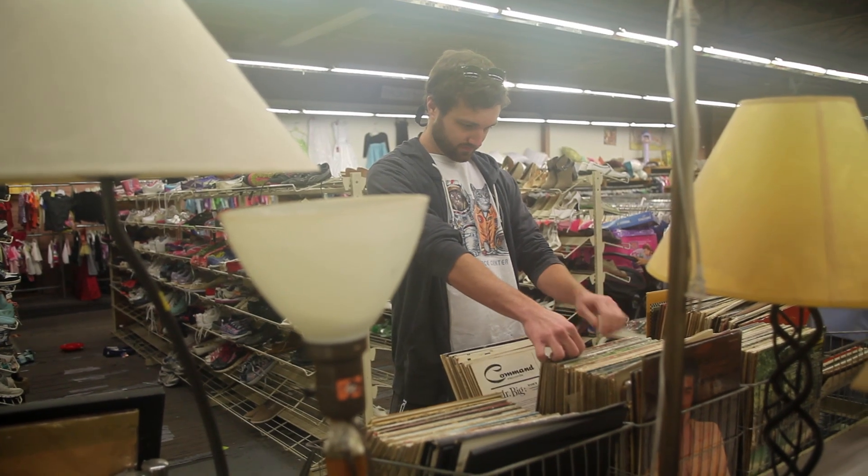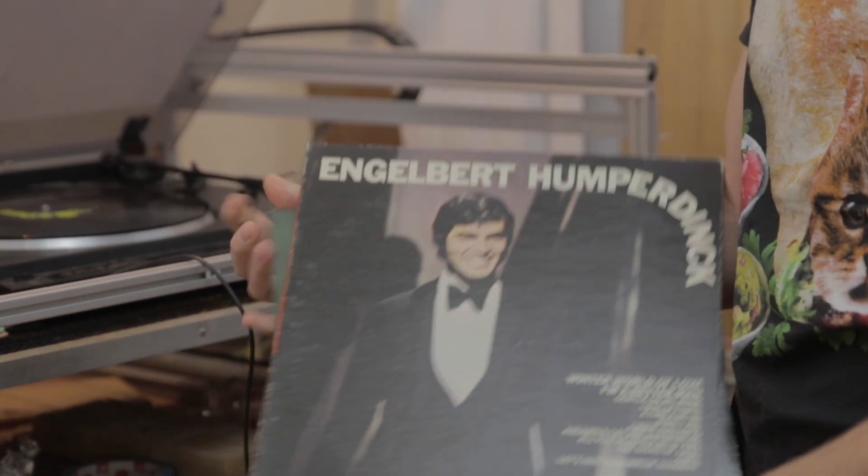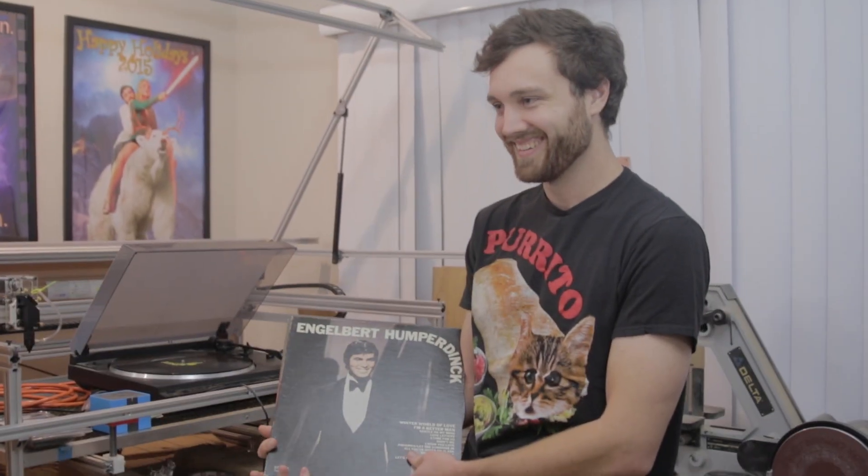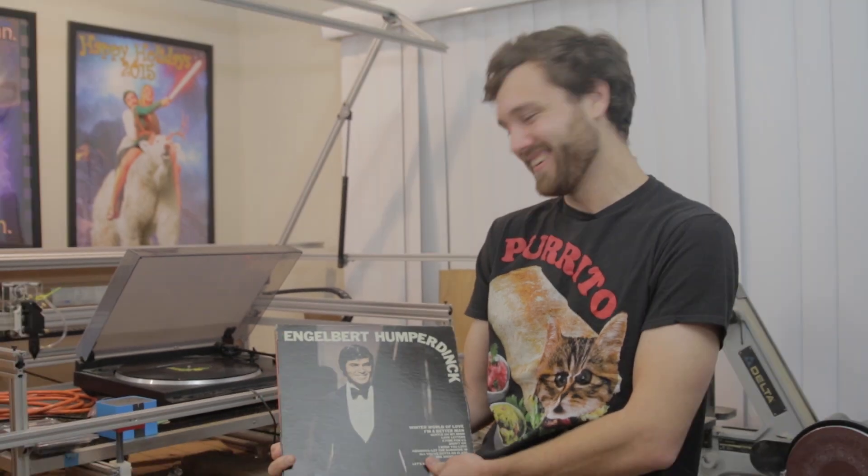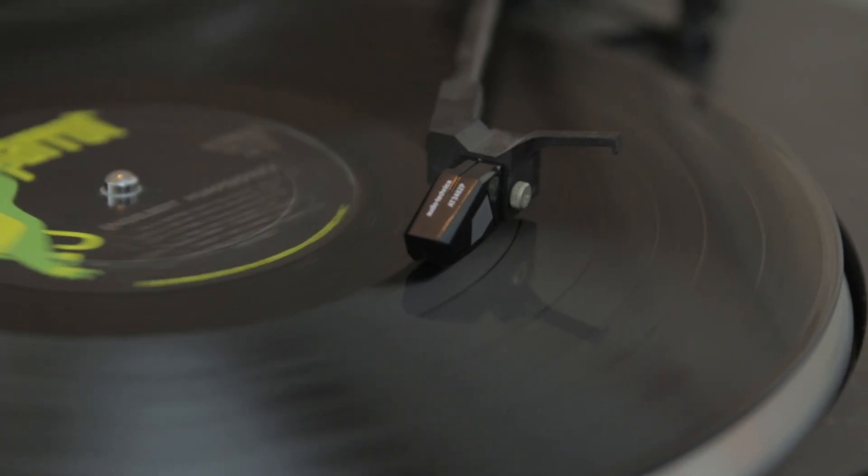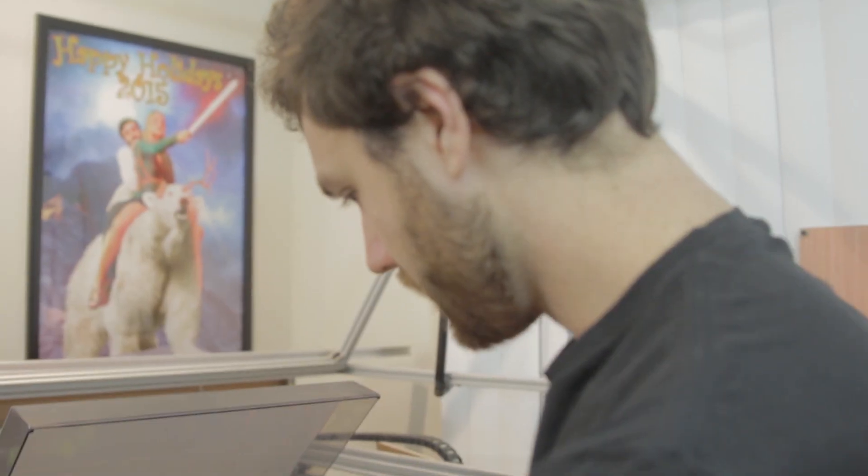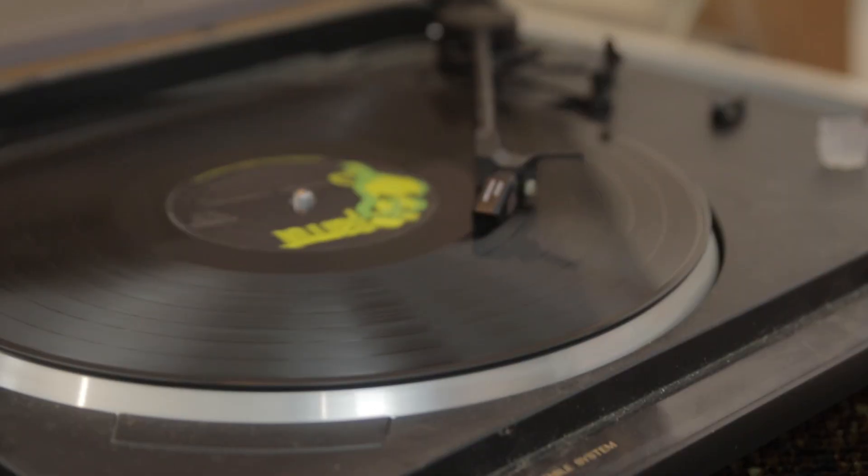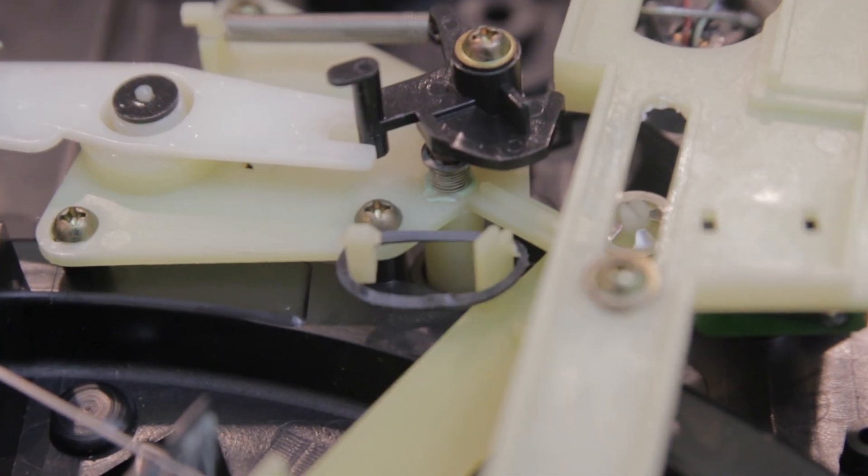Our thrift store music choices for testing the record player are Engelbert Humperdinck. Who names their kid Engelbert when their last name is already Humperdinck? That's working. Oh, sounds like a broken record. We fixed the record and then broke it again by ghetto-rigging it. Apparently someone's been in there before trying to fix it, which is probably why it's in the trash.